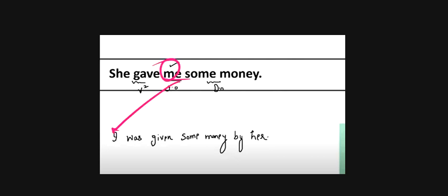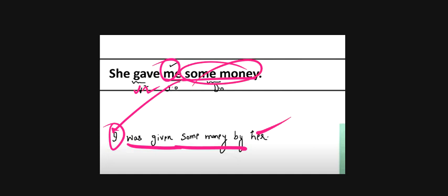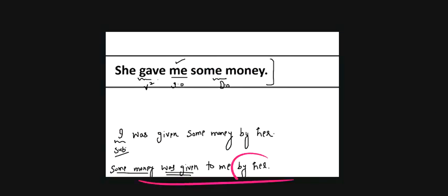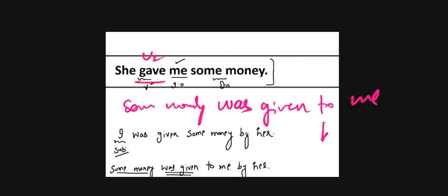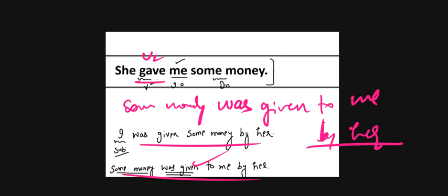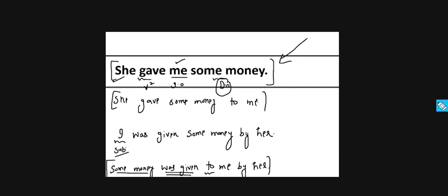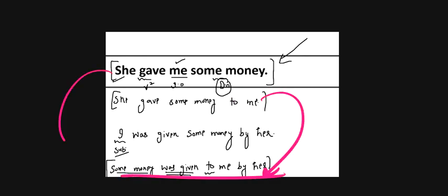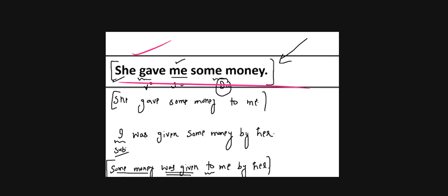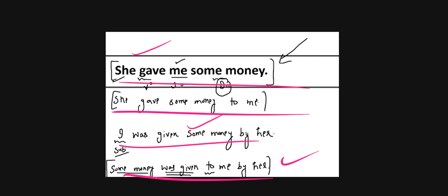The subject in passive should appear in subjective form — so 'I' rather than 'me.' Thus: 'I was given some money by her.' This is one passive form. The second passive form from 'she gave some money to me' is: 'Some money was given to me by her.' Both are correct passive versions of the original sentence.